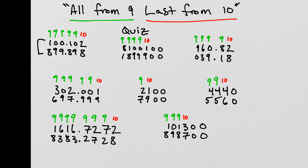Just to reiterate what we went over: when there are zeros at the end, we look to the left and consider the next non-zero digit as the 'last from 10' in the word formula, then simply drop those zeros down. When there's a decimal, just use the formula the same way and bring the decimal down. And when there's a zero in between numbers — our first case — we just subtract it from 9 like any other digit.